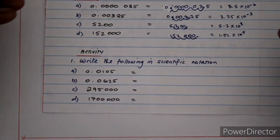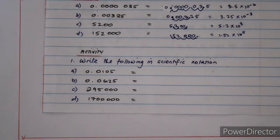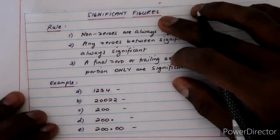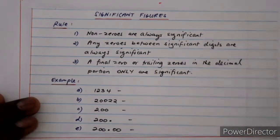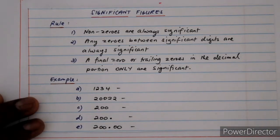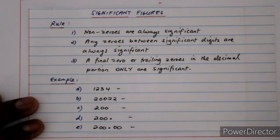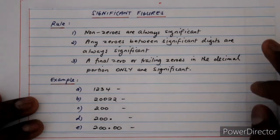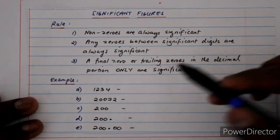You can try out the practice activities to improve your skills on scientific notation — post your answers in the comments and I can check whether they're correct. Now let's move on to significant figures. There are also three rules governing significant figures. Rule 1: non-zero digits are always significant — that is, any digit from 1 through 9. Rule 2: any zeros between significant digits are always significant. Rule 3: trailing zeros in the decimal portion only are significant.